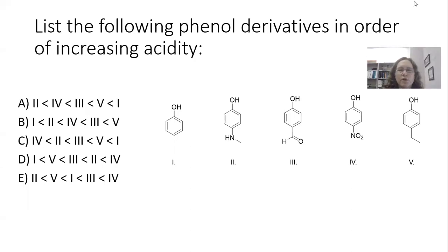This question asks, list the following phenol derivatives in order of increasing acidity. So acidity is impacted by several things that we've talked about in the past using the acronym CARIO. We have charge, we have atom, we have resonance, we have induction, and we have orbital.